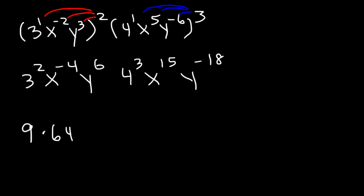Now let's multiply x to the negative 4th times x to the 15th. We need to add the exponents: negative 4 plus 15 is positive 11. And now let's combine the y exponents: positive 6 plus negative 18, or 6 minus 18, that's negative 12.